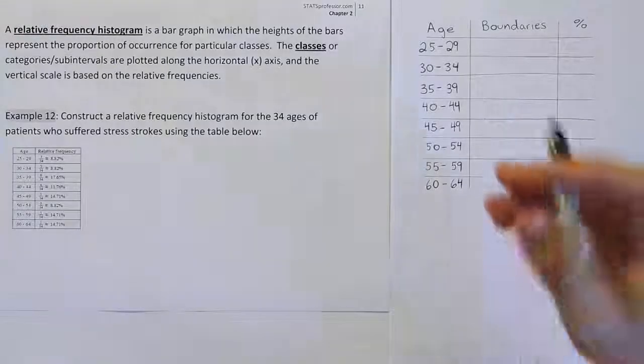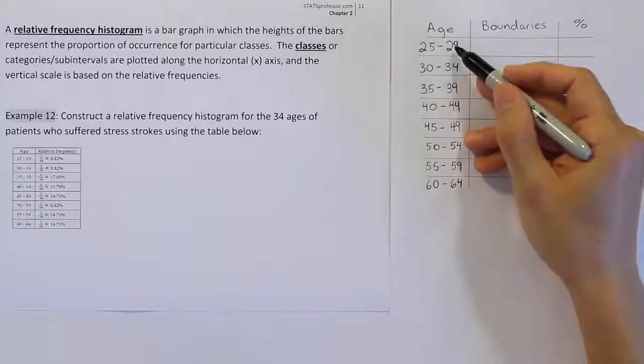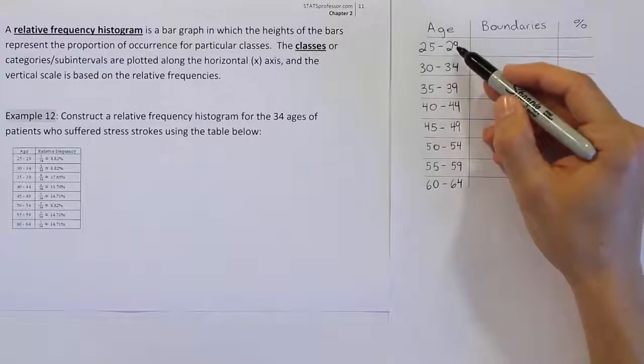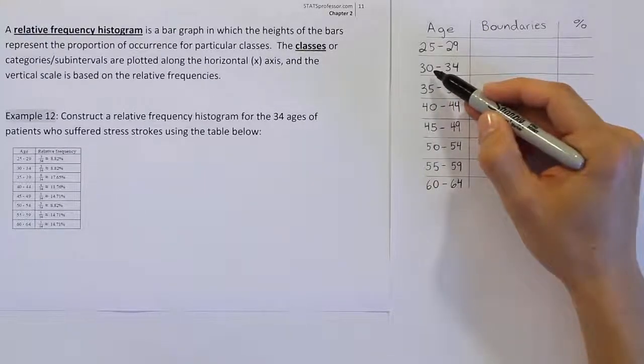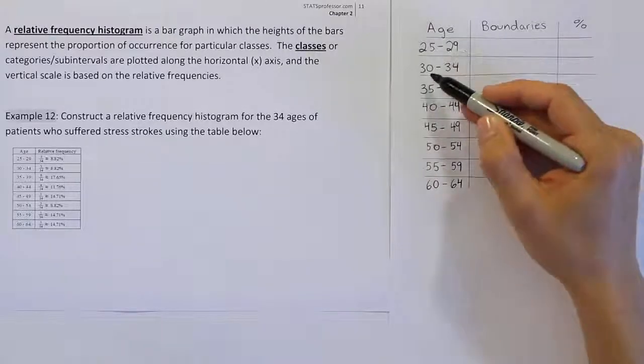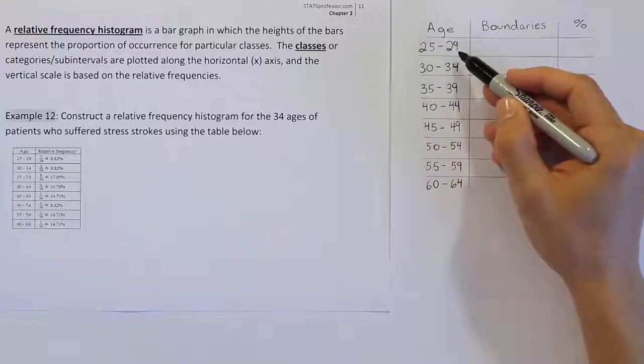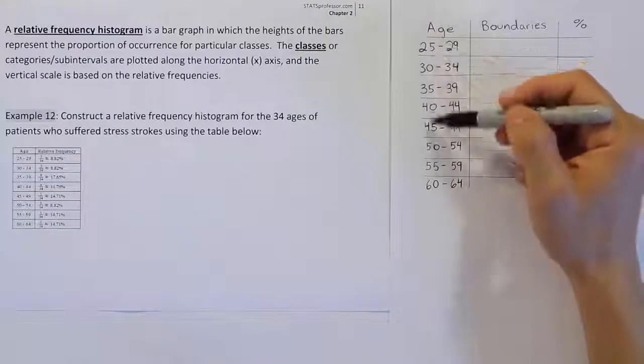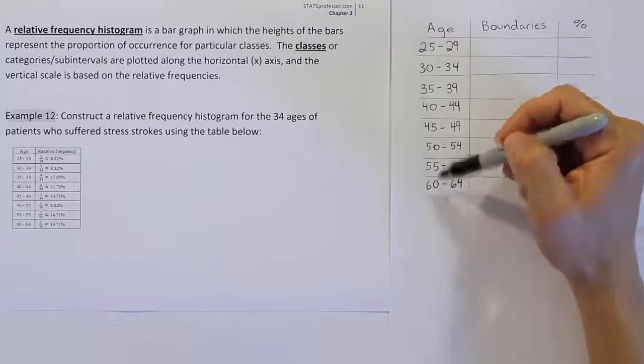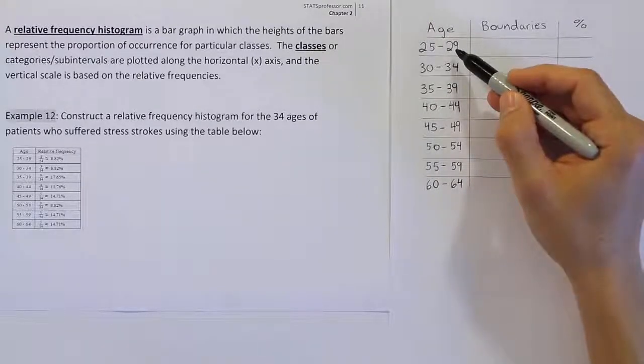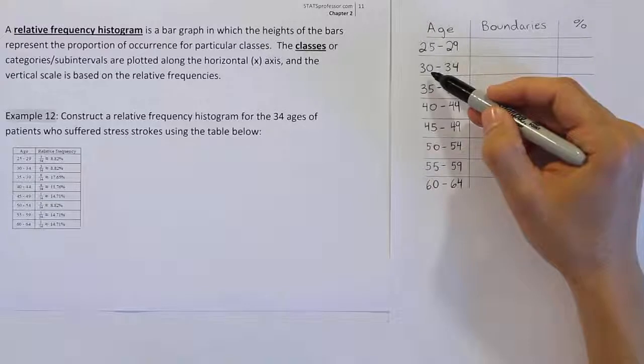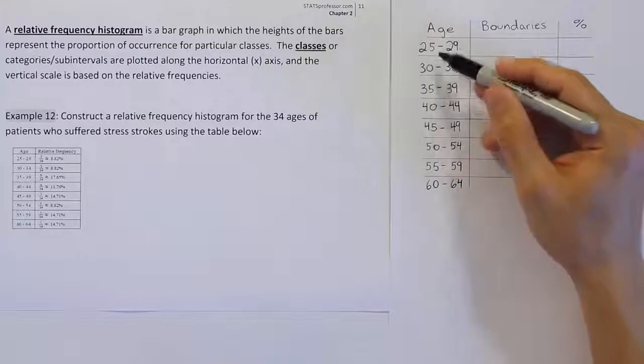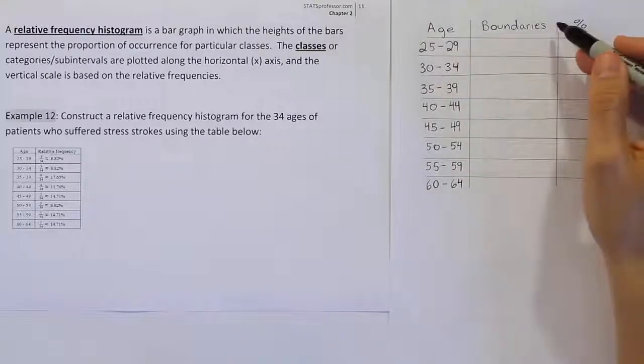If you recall in the past, we said that we take the difference between this number and this number, and then divide that difference in half. What's the difference between 29 and 30? The answer is 1, and if we divide 1 in half we get 0.5. 0.5 becomes the thing we use to generate all the boundaries. The way we do it is we subtract it from this column and add it to this column.